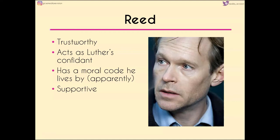Reed, in this first episode, is portrayed as very trustworthy — though I won't give away anything for future seasons. He acts as Luther's confidant: he's the one who seeks Luther out in the psychiatric ward and supports him after his showdown with Zoe. He apparently has a moral code he lives by and is not as willing to work outside of the box as Luther — again, just in this first episode. When we see him here it's normally in a supportive role, so to an extent he fits the helper character of Propp's theory, or perhaps even the donor character, depending on which part of the extract you're looking at.